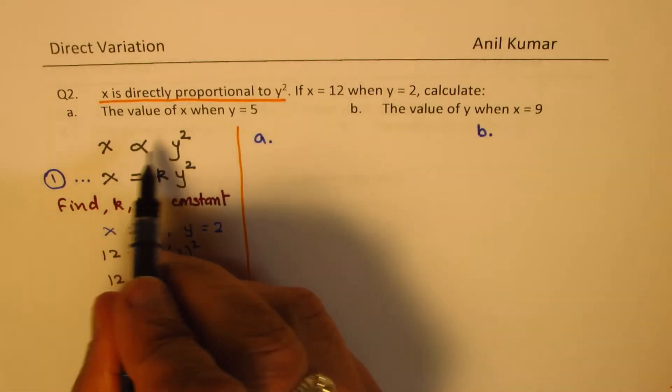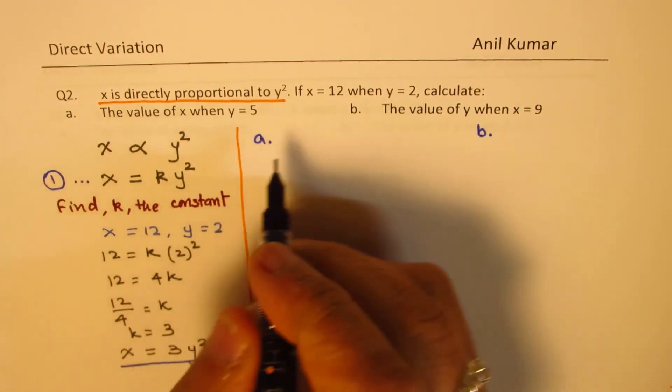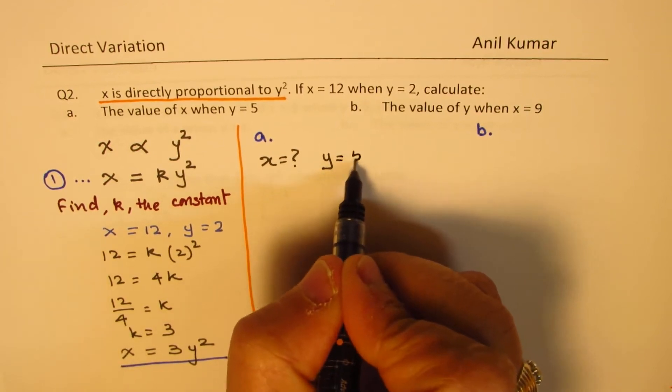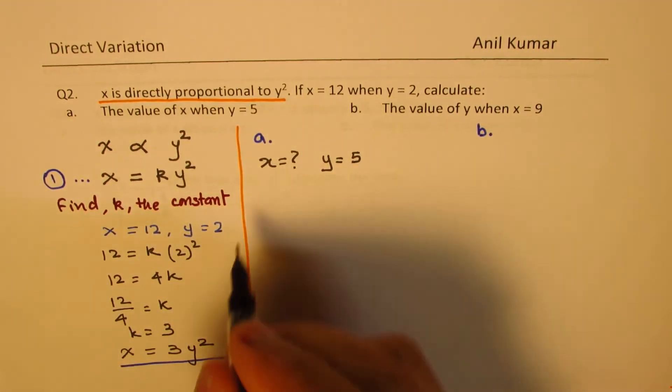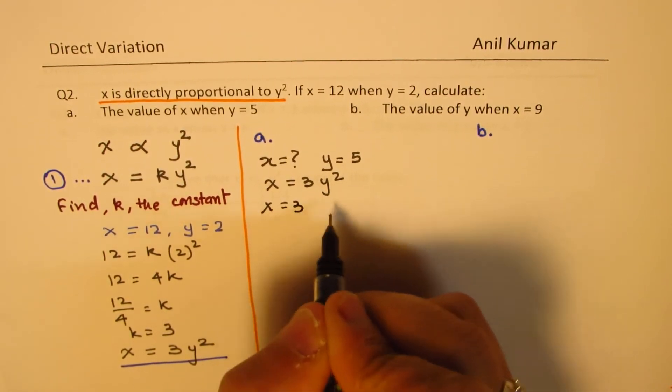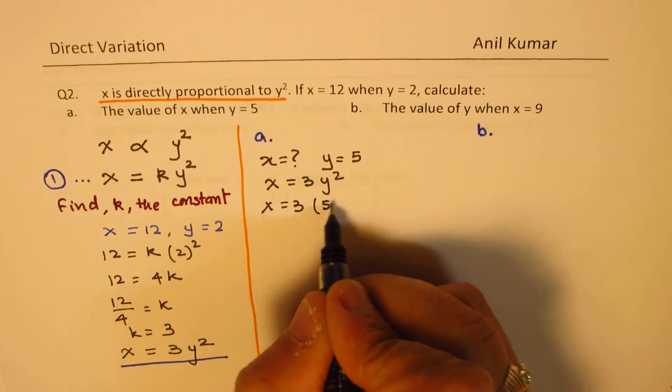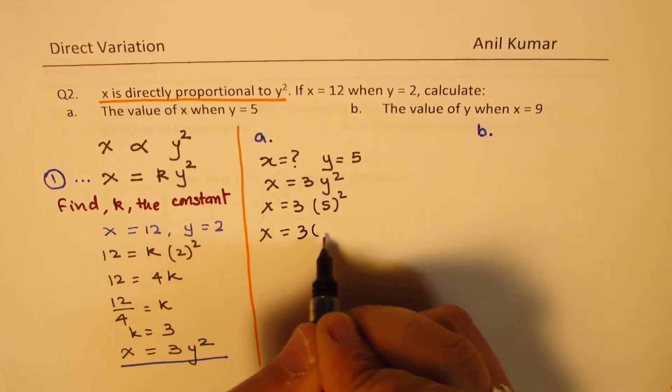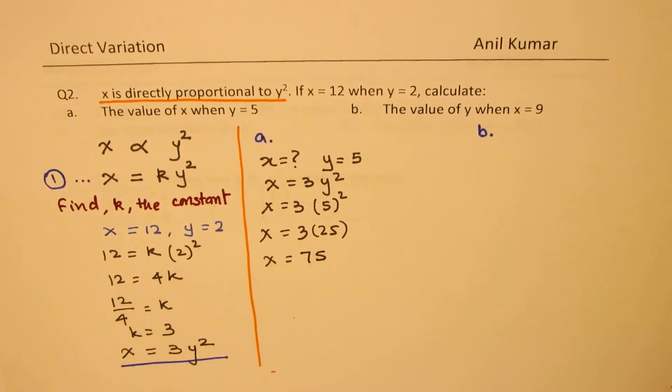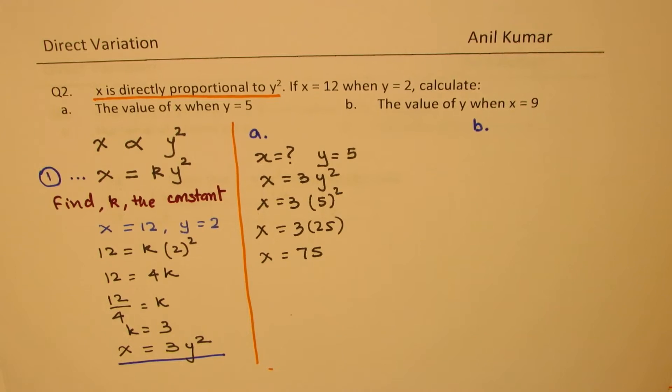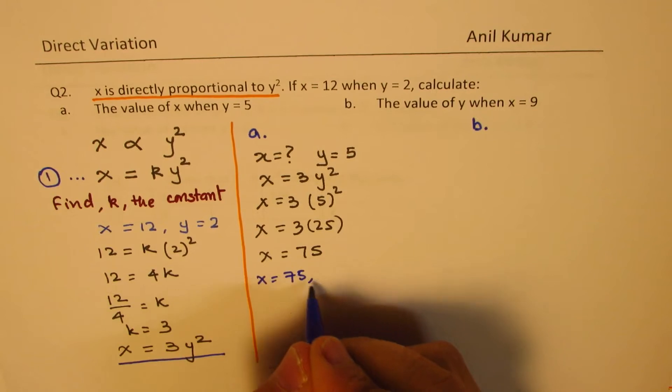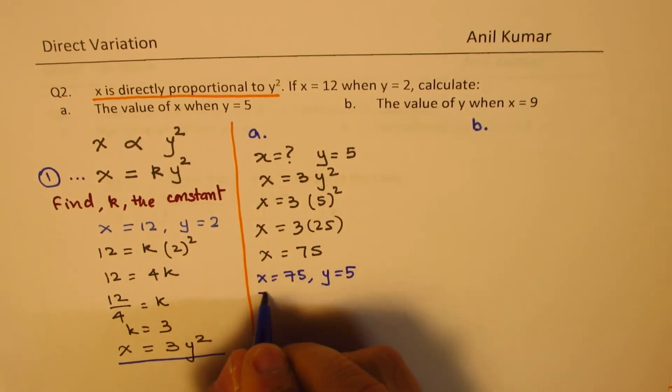Now in part a, we need to calculate the value of x. So we need to find what x is when y equals to 5. So the equation here is x is 3 times y square. So x is 3 times 5 square. So x is 3 times 25 or x is 75. So we get our solution that x is equal to 75 when y is equal to 5.